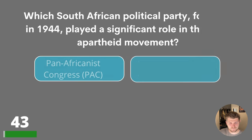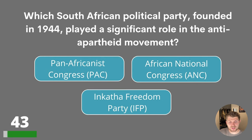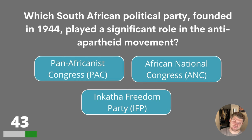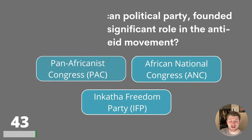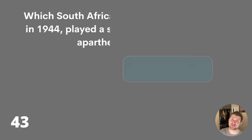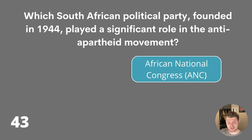Question forty-three. Which South African political party founded in 1944 played a significant role in the anti-apartheid movement? Pan-Africanist Congress, African National Congress or Inkatha Freedom Party? The answer is the African National Congress.